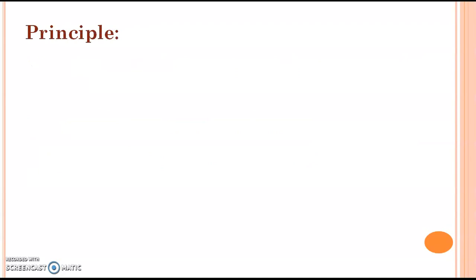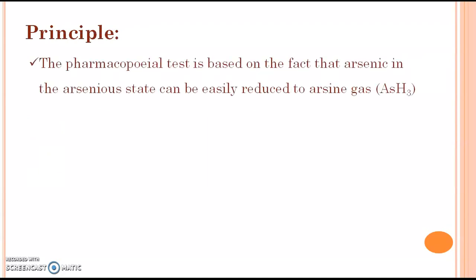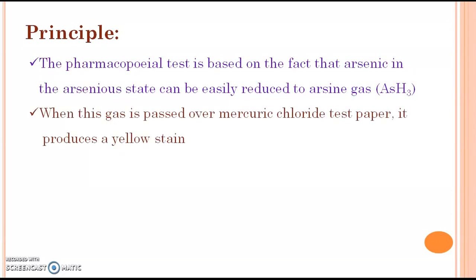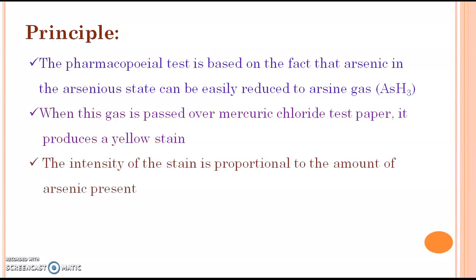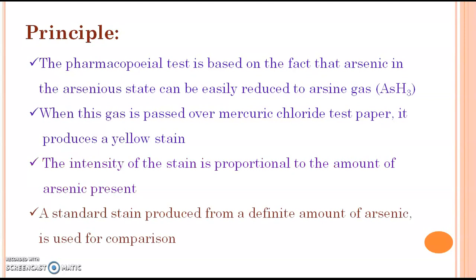The pharmacopoeia test is based on the fact that arsenic in the arsenous state can be easily reduced to arsine gas, and this arsine gas is passed over mercury chloride test paper and produces a yellow stain. The intensity of the stain is proportional to the amount of arsenic present.